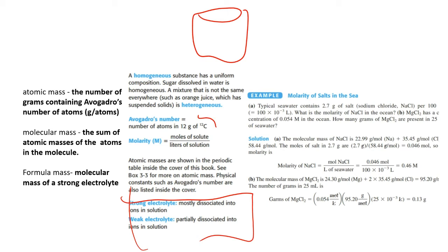Atomic mass is the number of grams containing Avogadro's number of atoms. Molecular mass is the sum of atomic masses. An example is the molecular mass of NaCl, because NaCl can dissociate into Na⁺ and Cl⁻, which is why it's a strong electrolyte.